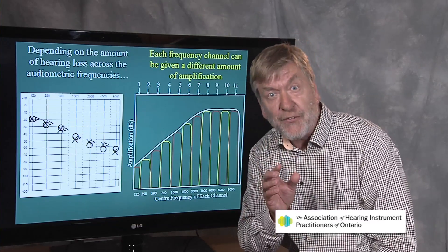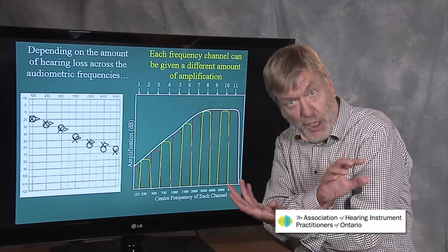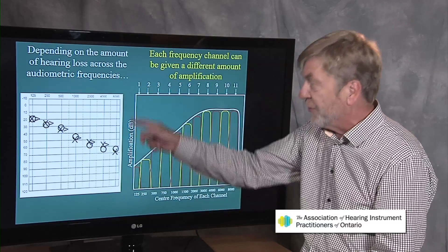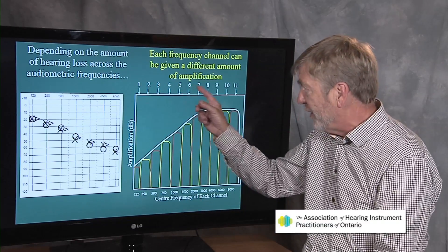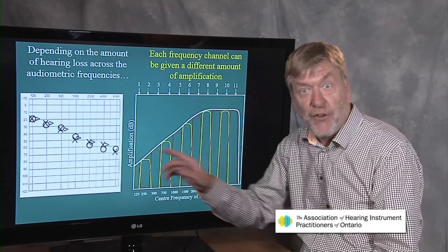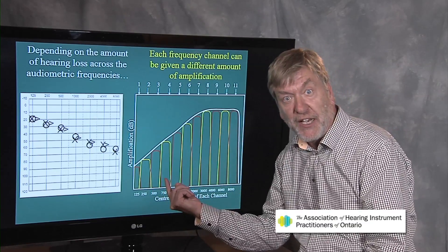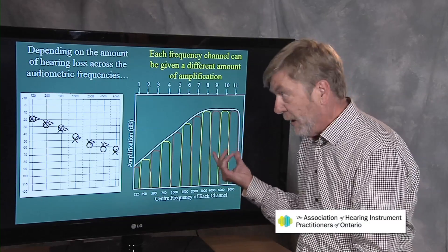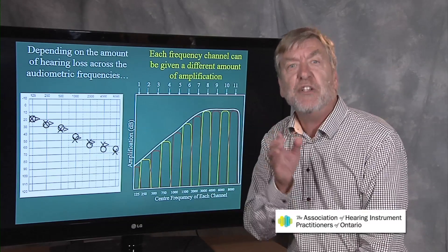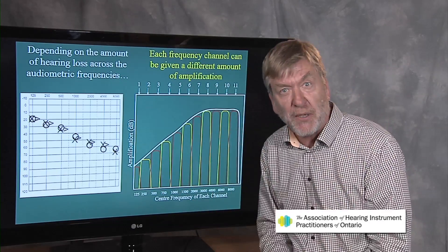A hearing aid for this person should be delivering somewhat of a mirror image configuration — the opposite shape. These are called channels. Frequency is along the bottom and amount of amplification is along the vertical. We can literally lift the amount of amplification we give for this particular person so that it can be shaped much like this. This person is getting very little bass amplification because he's got good bass hearing, and he's getting much more treble amplification because the treble hearing is worse. So hearing aids today are all multi-channel in order to exquisitely sculpt and shape what's called the frequency response of the hearing aid.